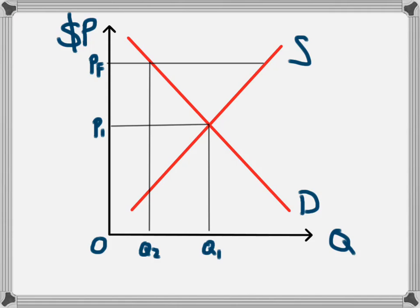Suppliers of that product however will see the higher prices and they will want to supply more. And so we see the intersection with the price and the supply level will lead to a supply of that product of Q3.